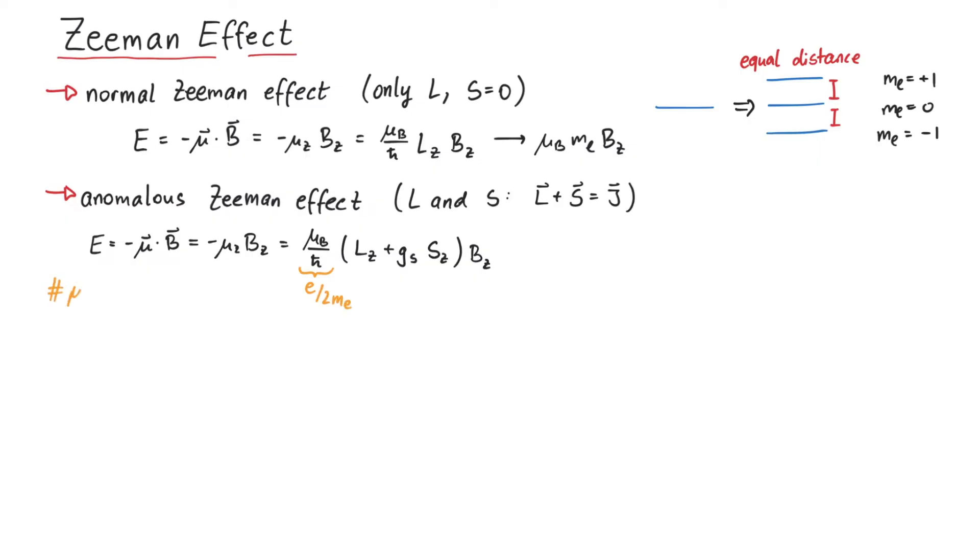Here we notice that the magnetic moment is no longer parallel to the total spin j, since gs is approximately 2.